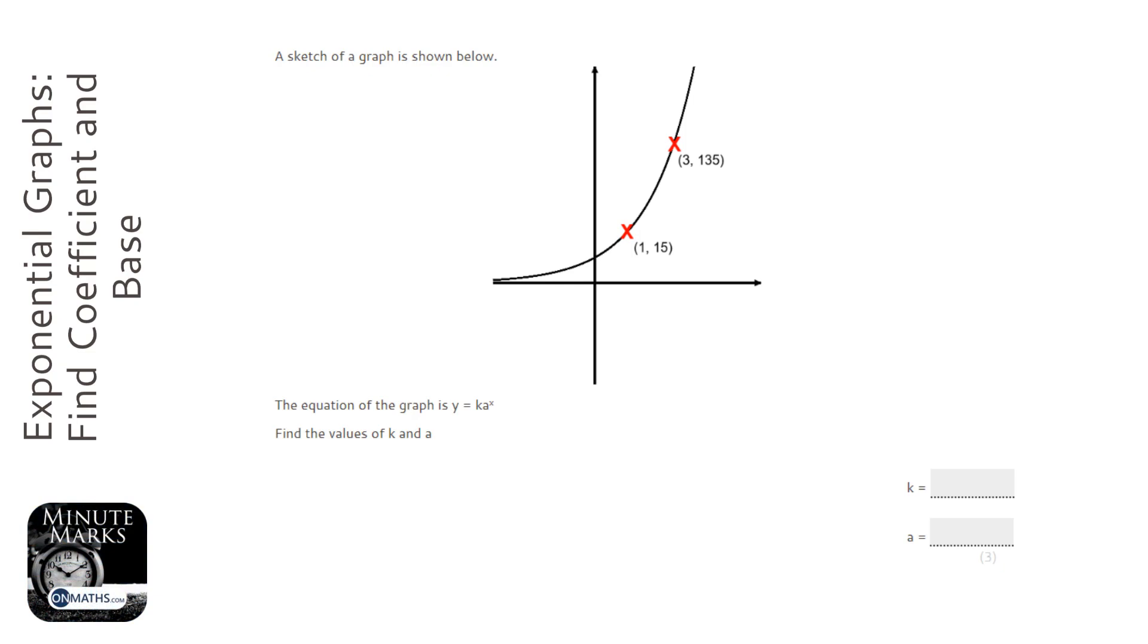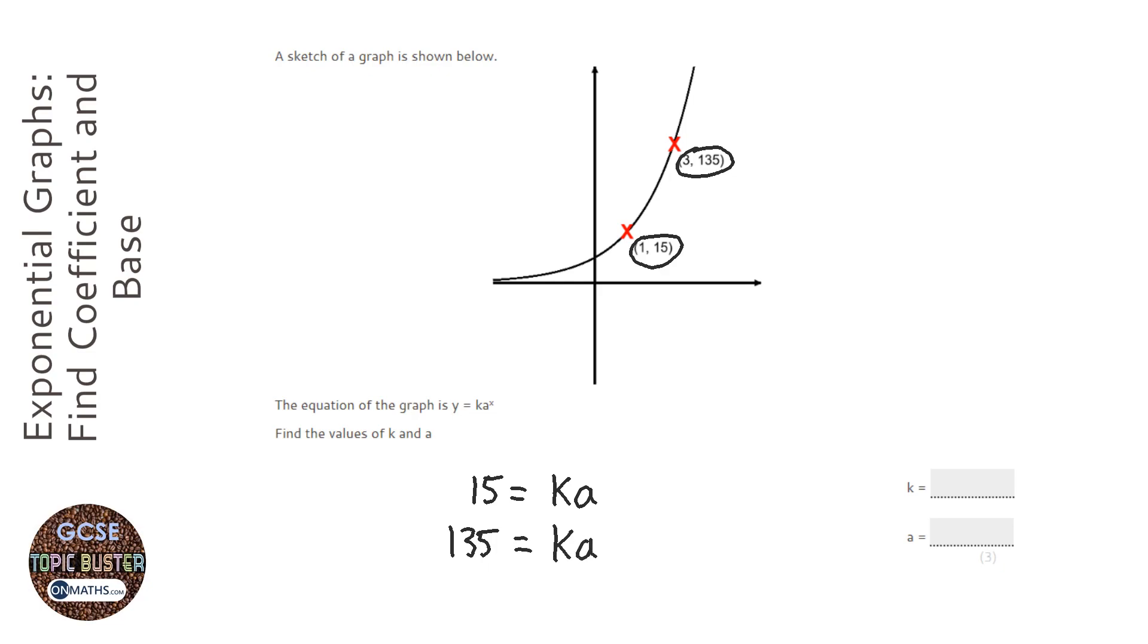So the way I'd start this question is to just look at this point here and substitute the values. So we've got 15 equals k a to the power of 1, which is just a. Okay, then underneath it I'm going to write this one here. So it's 135 equals k a to the power of 3.